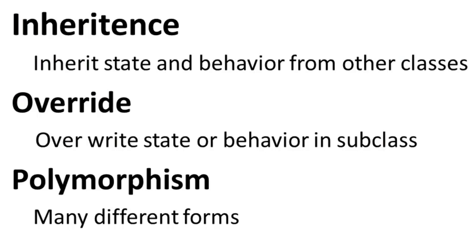In this tutorial we are going to discuss a few constructs of object-oriented programming. The first one is inheritance — inheritance basically inherits the state and behavior from other classes. Overriding is overriding the state or behavior in the subclass. Polymorphism, as the name specifies, means taking many different forms. Let's take an example to understand these concepts.